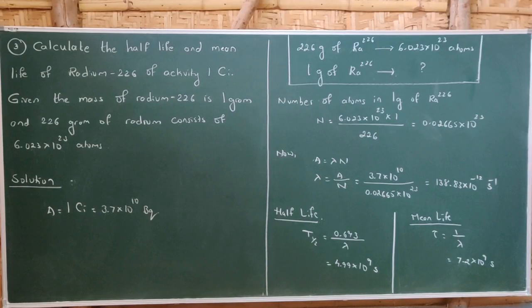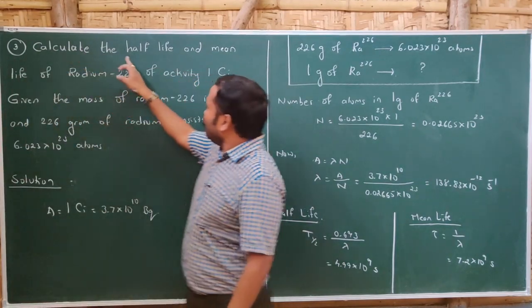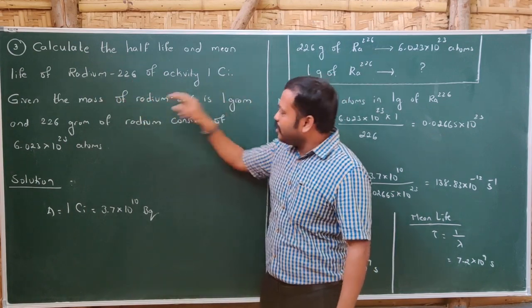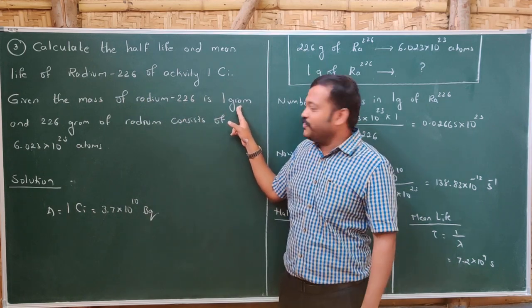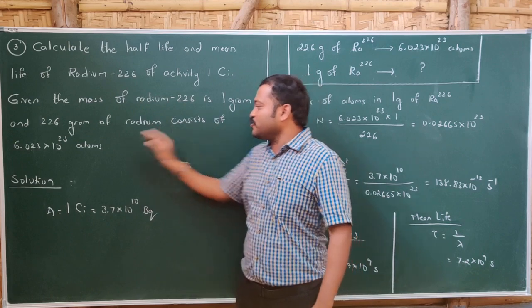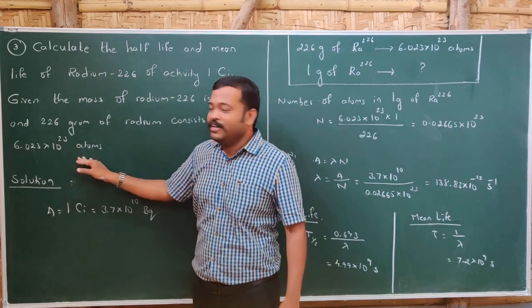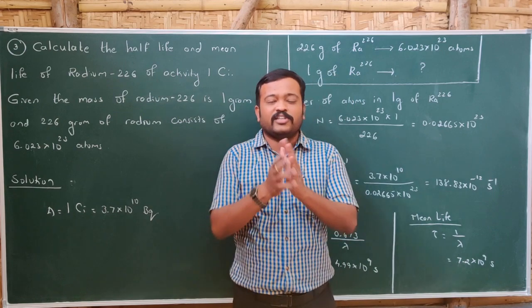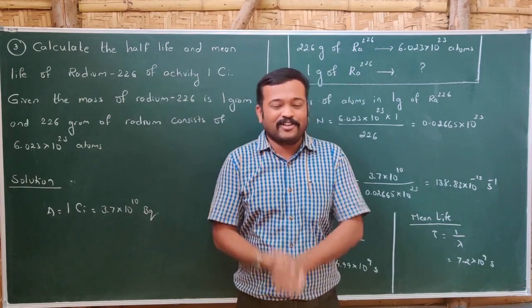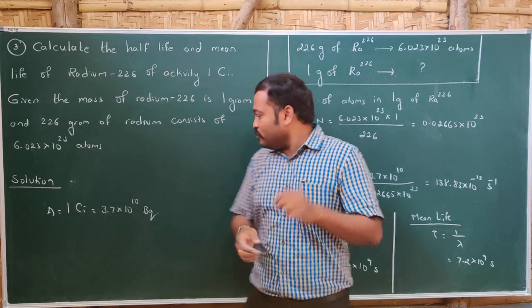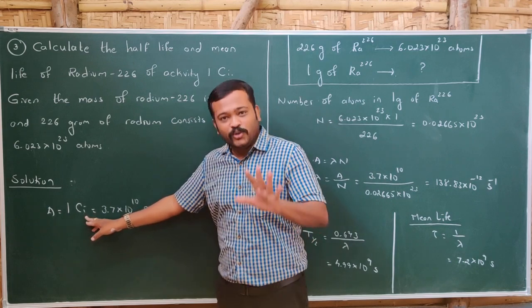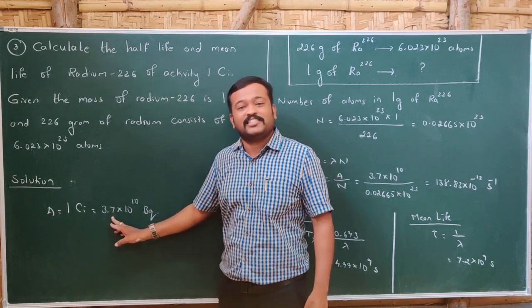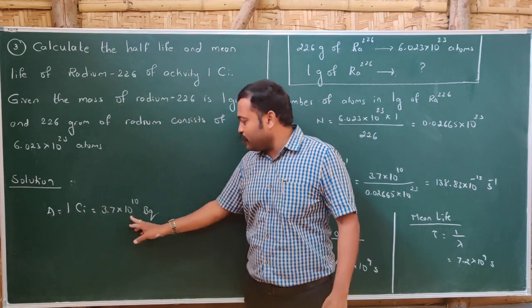Now the third problem: calculate the half-life and mean life of Radium-226 with activity 1 curie, given mass of Radium-226 is 1 gram, and 226 grams of Radium-226 consists of 6.023 × 10²³ atoms. Activity 1 curie is not an SI unit — convert to becquerel by multiplying by 3.7 × 10¹⁰, giving 3.7 × 10¹⁰ becquerel.